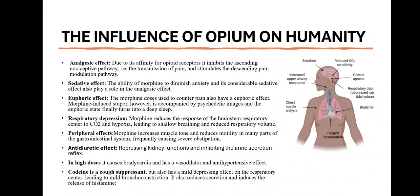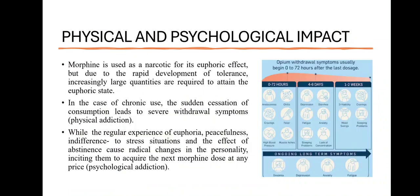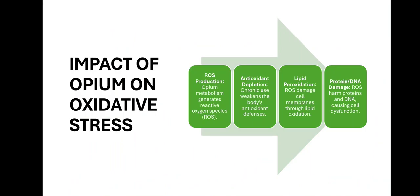Here are the influences of opium on humanity — physical and physiological impact. Morphine is used as a narcotic for its euphoric effect, but due to the rapid development of tolerance in the case of chronic use, the sudden cessation of consumption leads to several withdrawal symptoms. The regular experience of euphoria and the effects of abstinence cause radical changes in the personality of users, driving them to acquire the next morphine dose at any price.